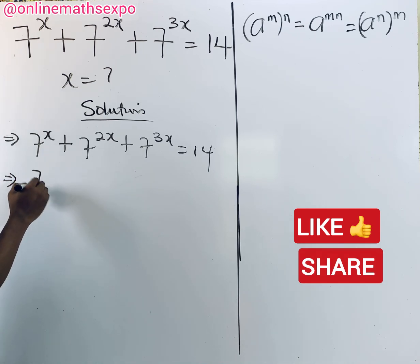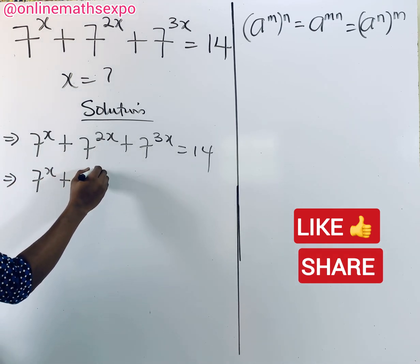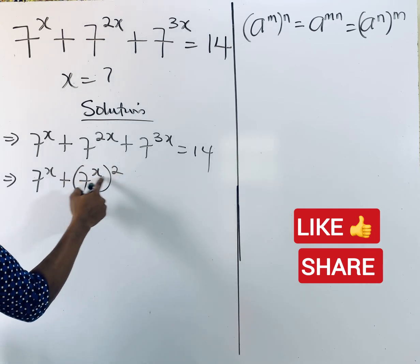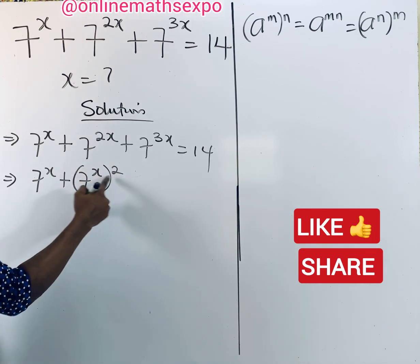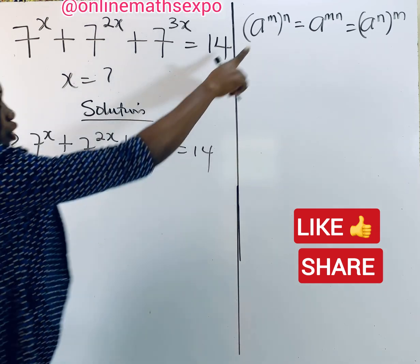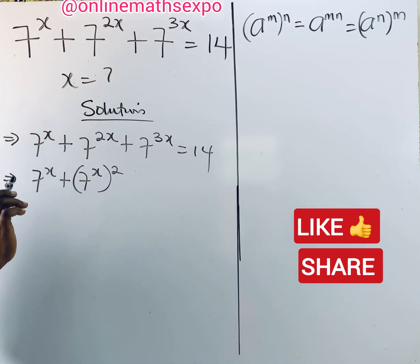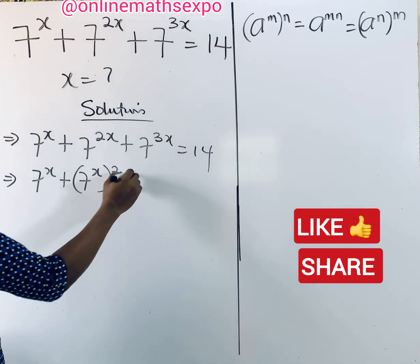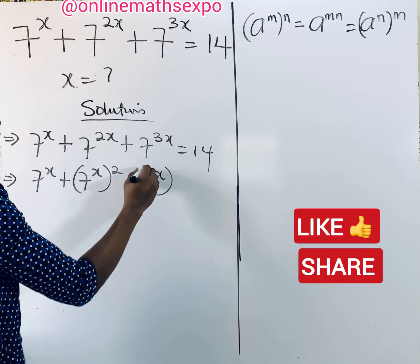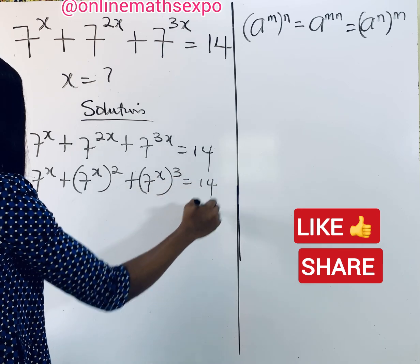This is 7 to the power of x, plus 7 to the power of x raised to the power of 2 — multiplying gives you 2x according to this rule, so we haven't changed anything — plus 7 to the power of x raised to power 3, all equal to 14.